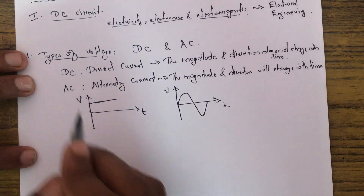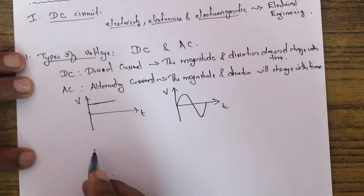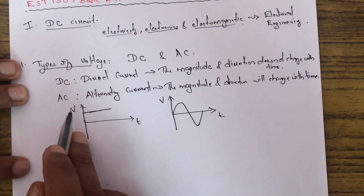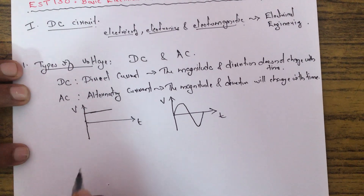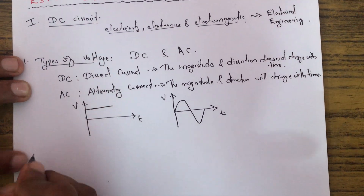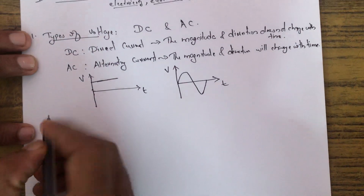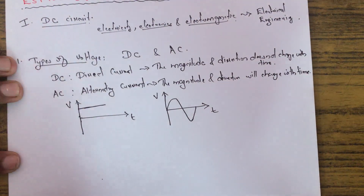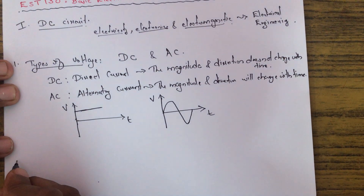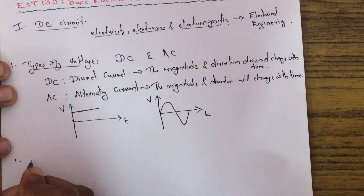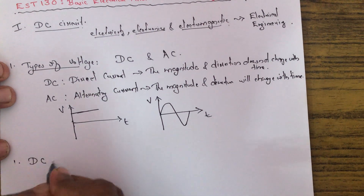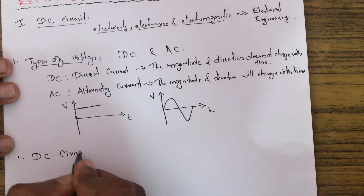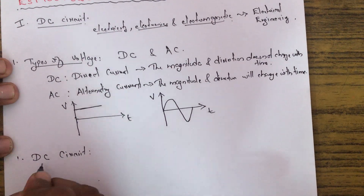So those are the two types of voltages: DC (direct voltage) and AC (alternating voltage). The first module deals with DC circuits, so let us look at DC circuits.